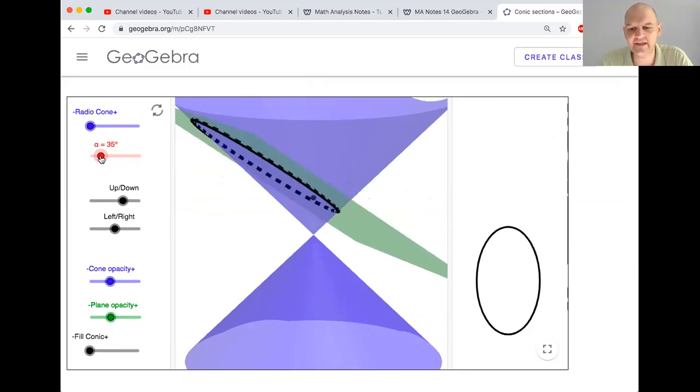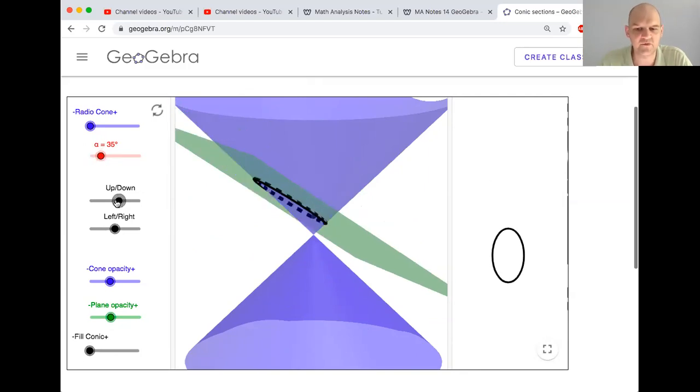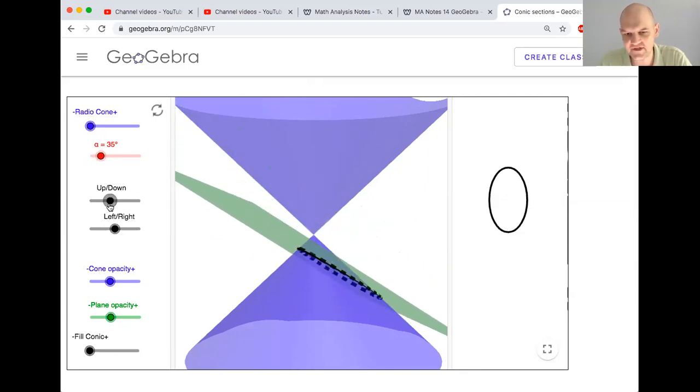Here, we're on a slant, but not an extreme slant, right? We haven't gotten to 45 degrees. We're between zero and 45 degrees. We're getting an ellipse. We can move it up and down and you see what you get.